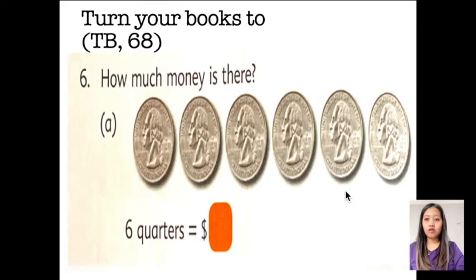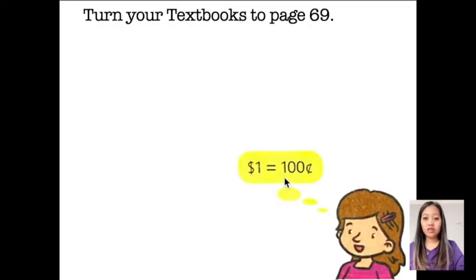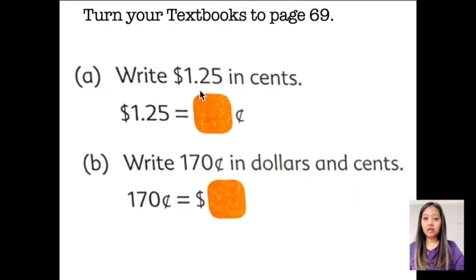Now, let's move on to number six. How much money is there? Six quarters is equal to... Let's remember. How much is a quarter? One quarter is 25 cents. So what's the answer here? One dollar, 50 cents. One dollar is equivalent to a hundred cents.